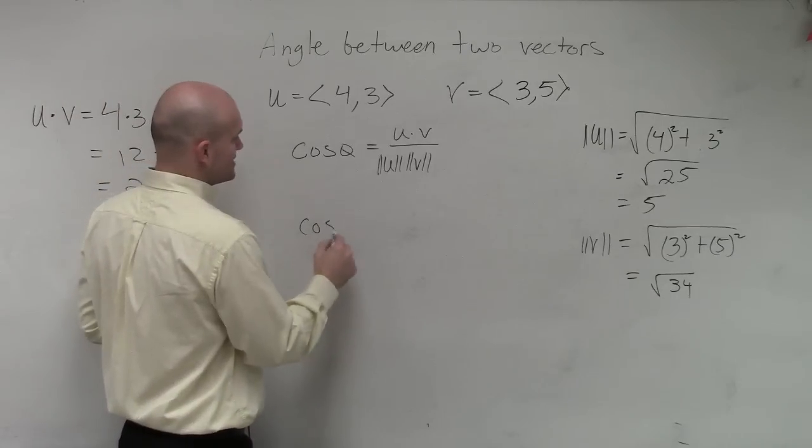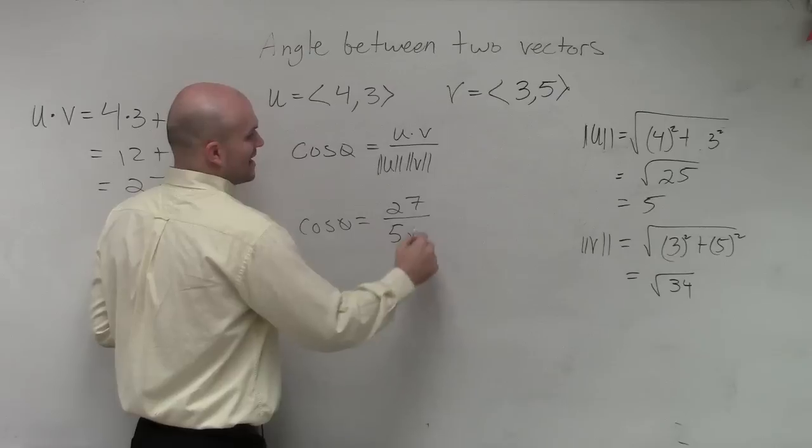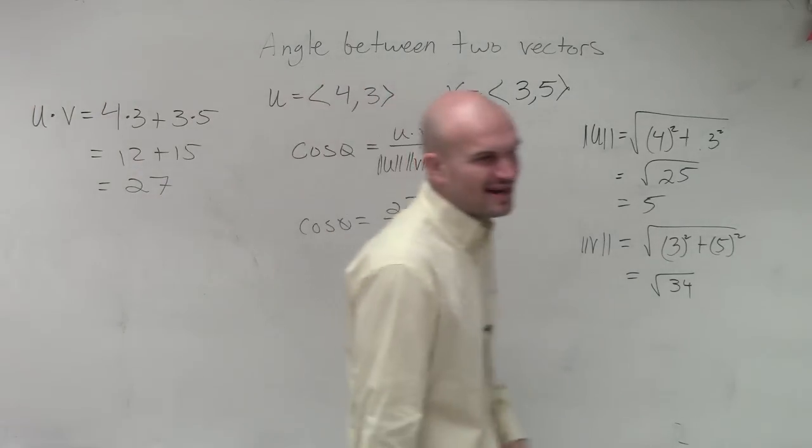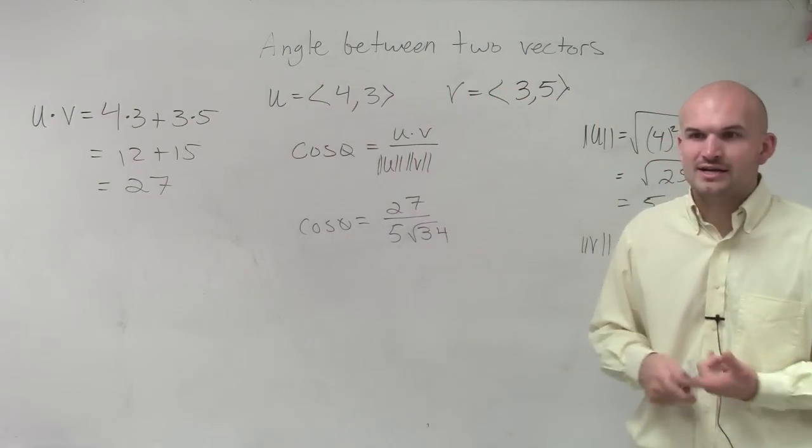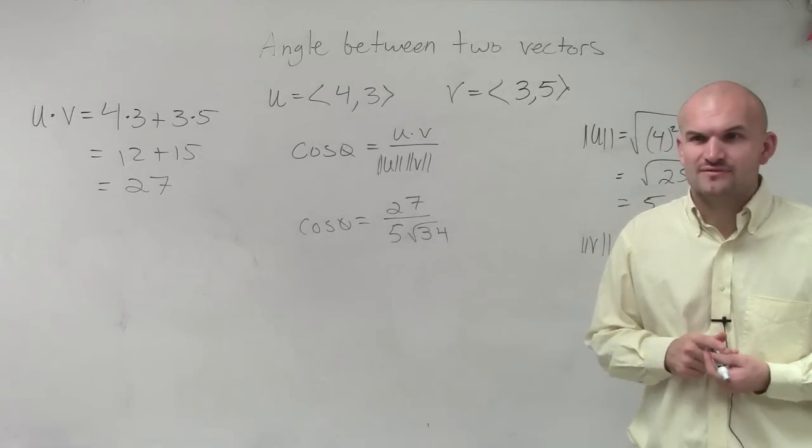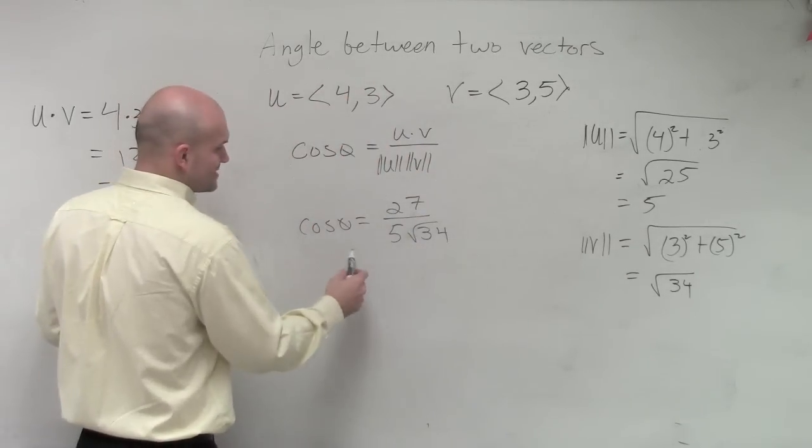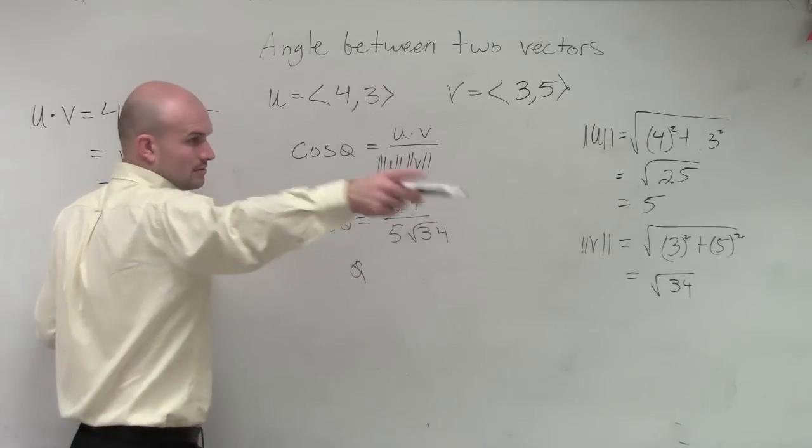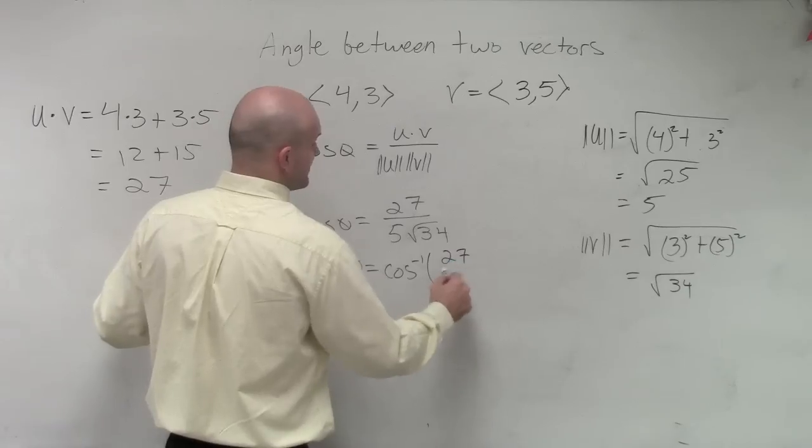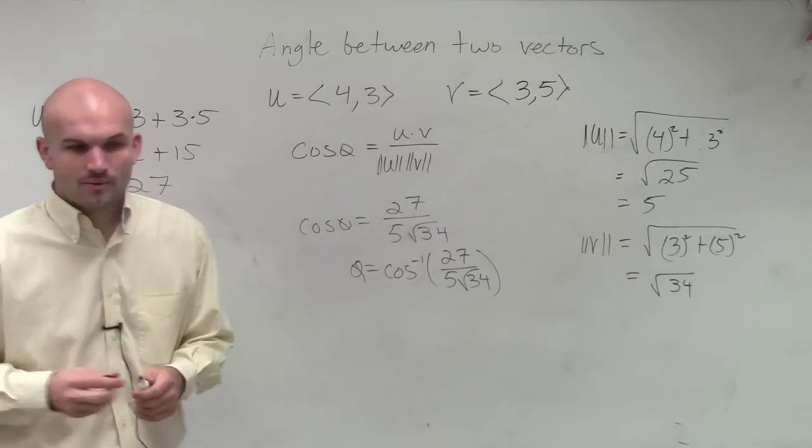So therefore, I have cosine of theta equals 27 divided by 5 times the square root of 34. Now we look at this and say, can we simplify anything? Can we reduce anything between 27 over 5? Really nothing. So to find theta, theta is going to equal the cosine inverse of 27 over 5 times the square root of 34. Now I need to figure out what that value is.